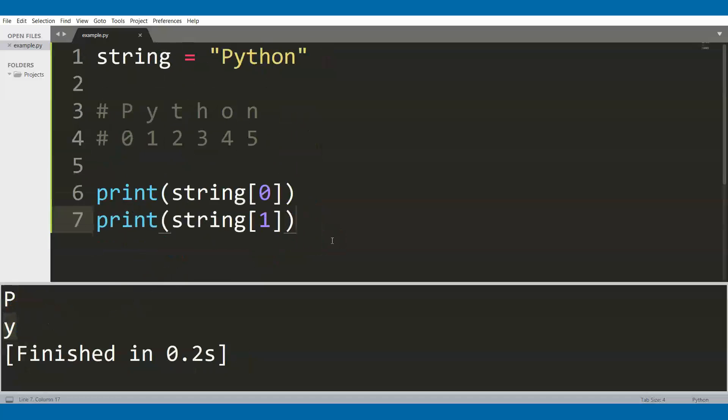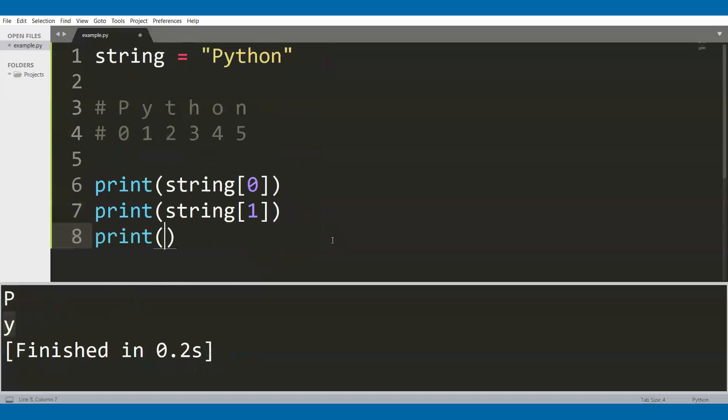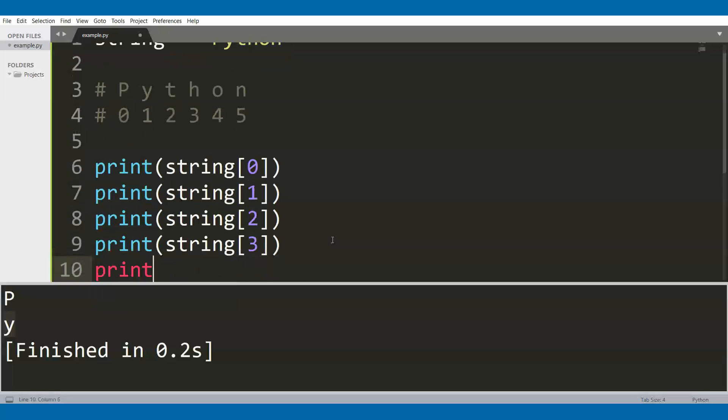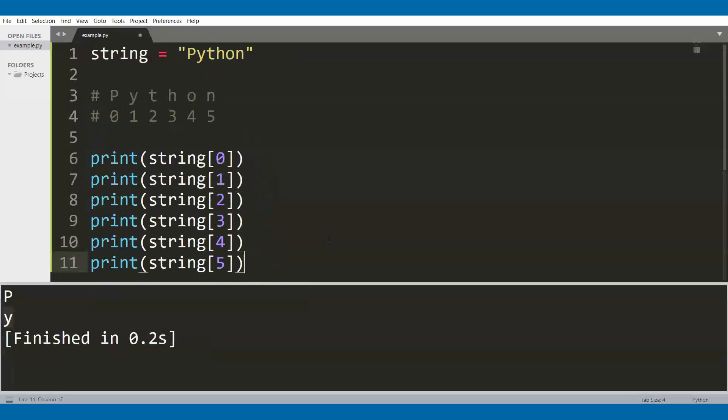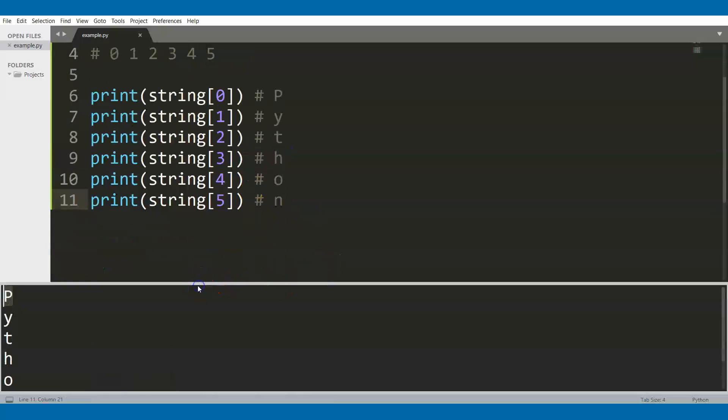Let's do the same for all the different characters of the string. Let's write this with the corresponding characters. We save the file and run the code, and right now we can see the output, exactly what we expected.